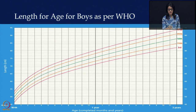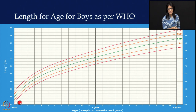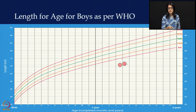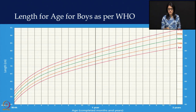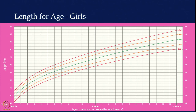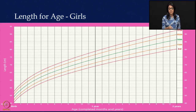For the length-for-age chart: the average birth length for a boy child is 50 centimeters — each line is 1 centimeter. The green line intersects at 50 cm at birth, and at 6 months it is about 66 to 67.5 cm. The tutorials go into more detail on this chart. The average birth length for a girl child is 49 centimeters — 49 cm for girls and 50 cm for boys at birth.